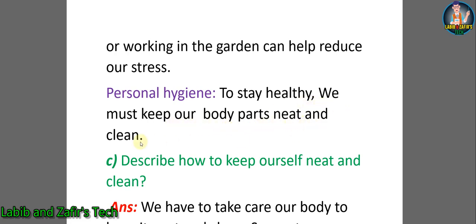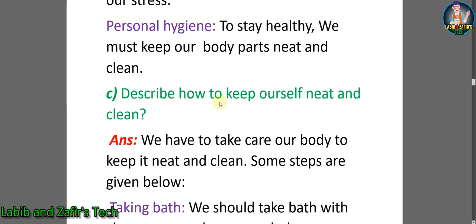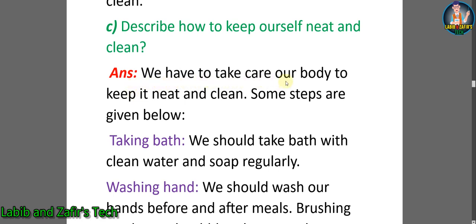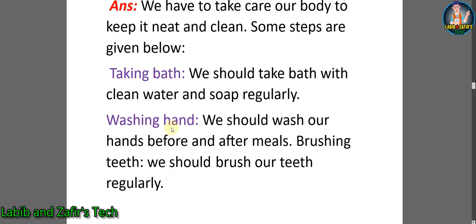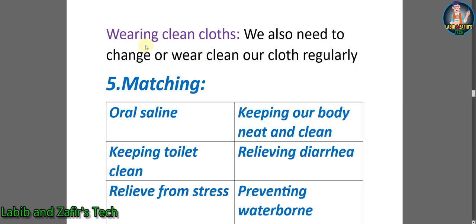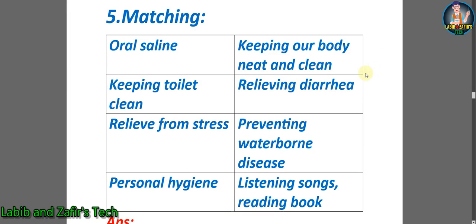Personal hygiene — to stay healthy we must keep our body parts neat and clean. C) Describe how to keep ourselves neat and clean. Answer: we have to take care of our body to keep it neat and clean. Taking bath — we should take bath with clean water and soap regularly. Washing hands — we should wash our hands before and after meals. Brushing teeth — we should brush our teeth regularly. Wearing clean clothes — we need to change and wear clean clothes regularly.